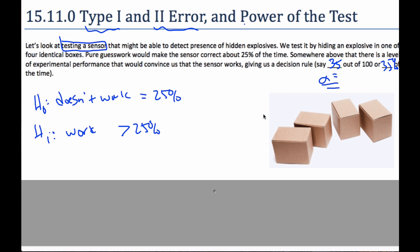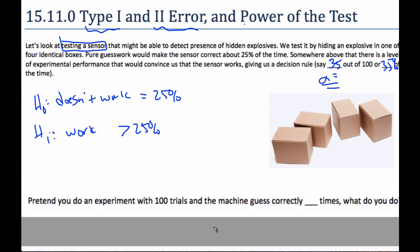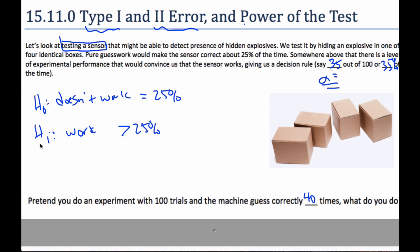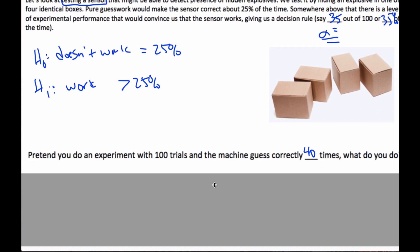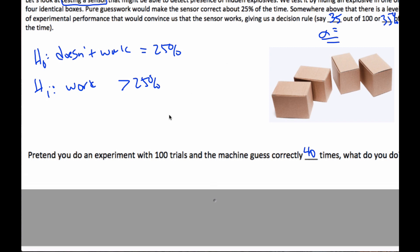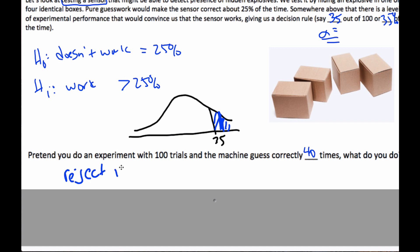Consider doing this with 100 trials and the machine correctly guesses 40 times. Well, 40 is more than 35, so that is going to convince me to reject the null hypothesis and support that it does work — and so I could save lives. Thinking of this as a normal curve, here would be my 35% threshold and 40% would fall in the critical region. Therefore I would reject the null hypothesis and say the machine works better than guessing.